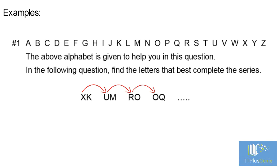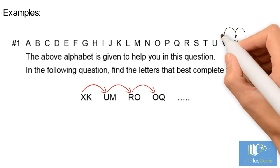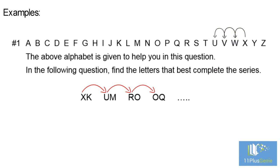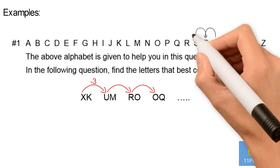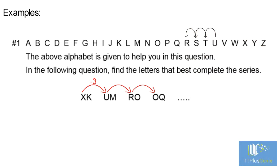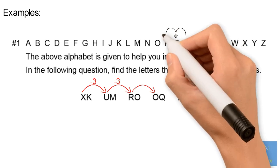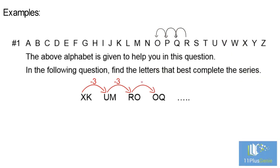From X to U is moving backwards three places in the alphabet, so it is minus 3. From U to R is moving backwards three places in the alphabet, again minus 3. From R to O, we see the same pattern, namely minus 3.